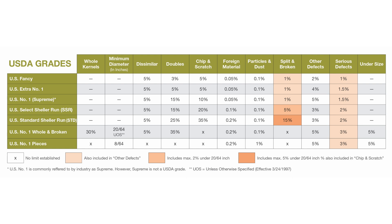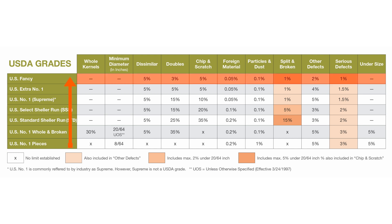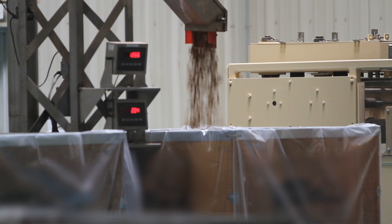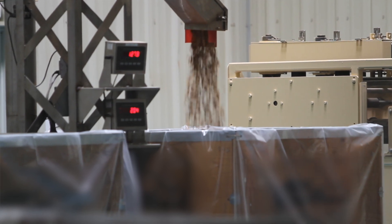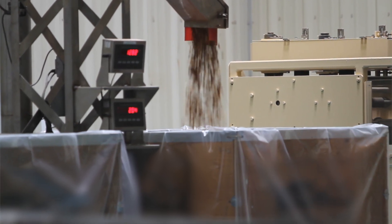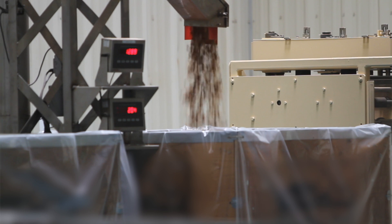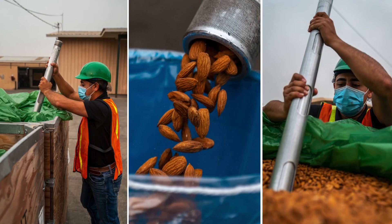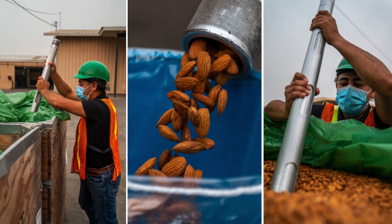Tolerances or limits for each parameter are set for each grade and summarized in the USDA grade chart. The higher the almond grade, the tighter the tolerance. It's important to note that parameter tolerances for all grades are meant to be applied to the entire lot, and a representative sample shall be taken to determine the grade.